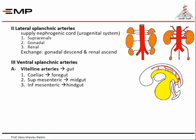Regarding the ventral splanchnic arteries — the vitelline arteries — these supply the gut tube which is made of foregut, midgut, and hindgut. The foregut is supplied by one artery called the celiac trunk, the midgut by the superior mesenteric artery, and the hindgut by the inferior mesenteric artery. These are the single branches arising from the front of the abdominal aorta.